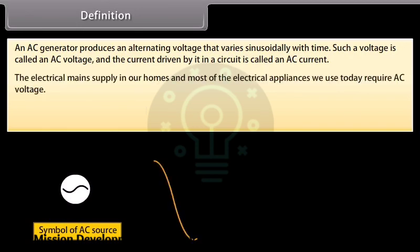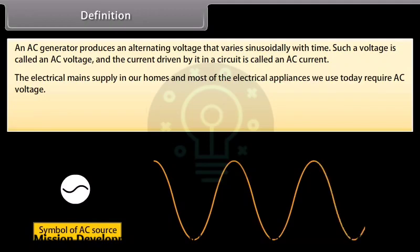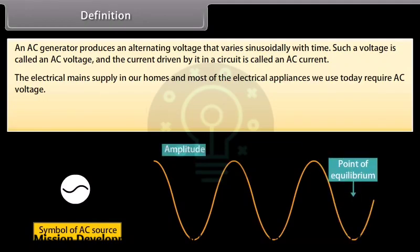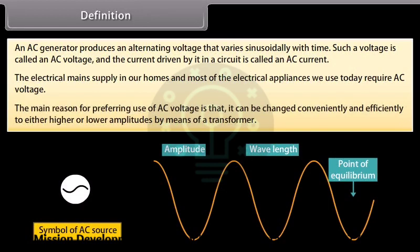The electrical main supply in our homes and most of the electrical appliances we use today require AC voltage. The main reason for preferring AC voltage is that it can be changed conveniently and efficiently to either higher or lower amplitudes by means of a transformer.